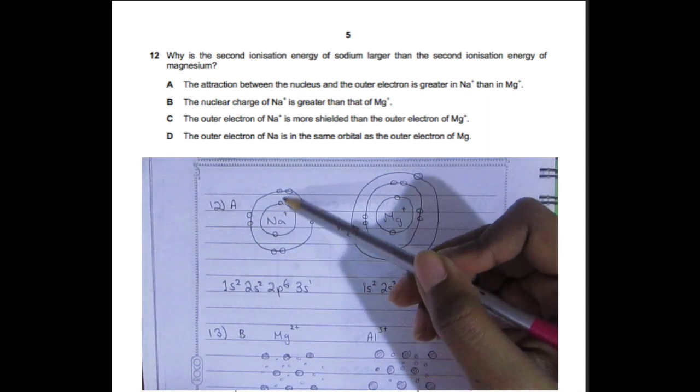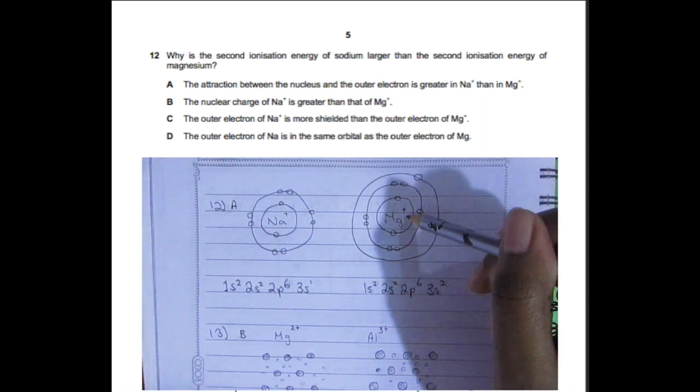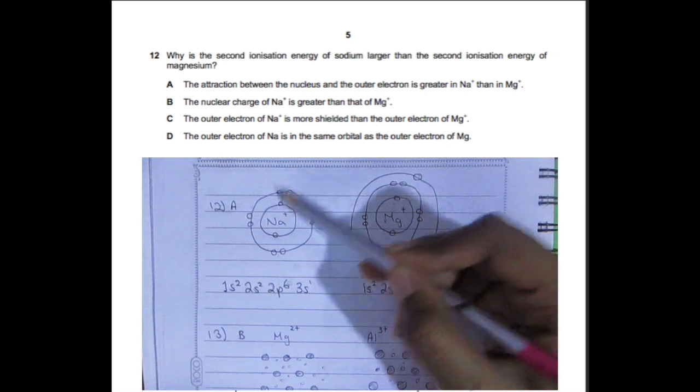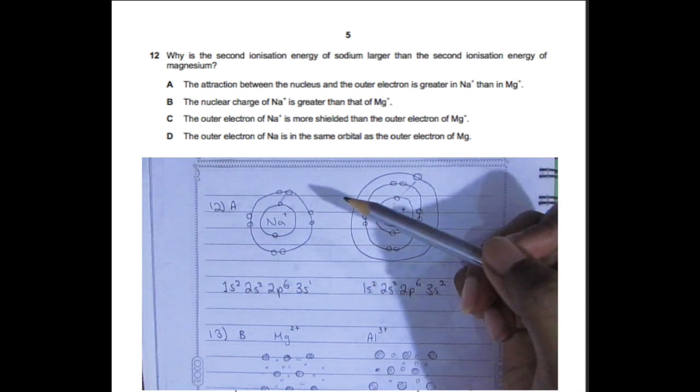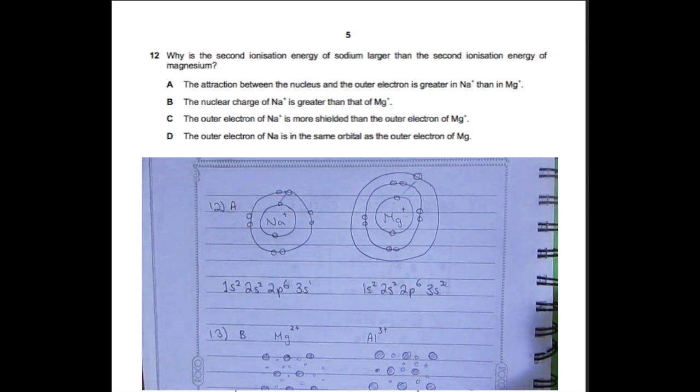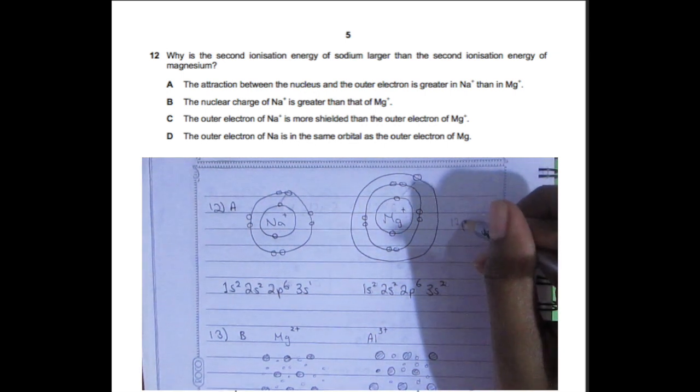Instead of having three shells, we only have two, so the distance between the nucleus and the outer electrons decreases, and the force of attraction will be stronger with less electron pair repulsion. With magnesium, it has 12 electrons. We lost one but there's still one more, so we have three shells not two, and distance is still great. That's why less energy is needed for it to be ionized.